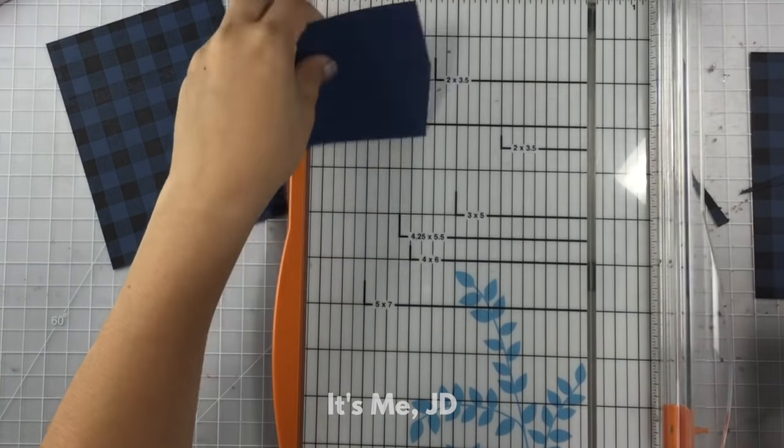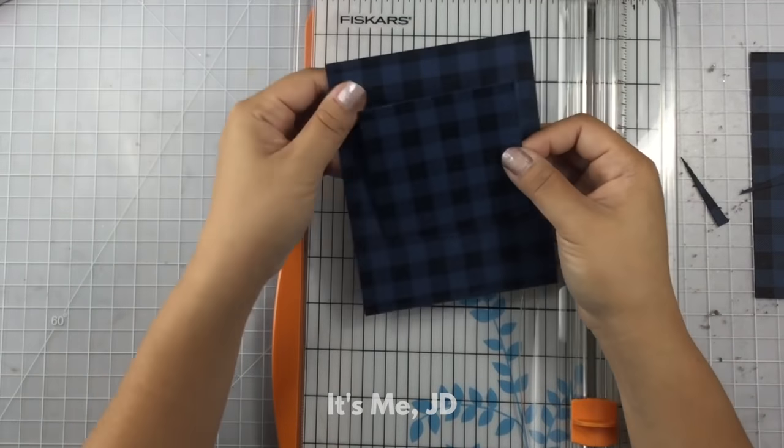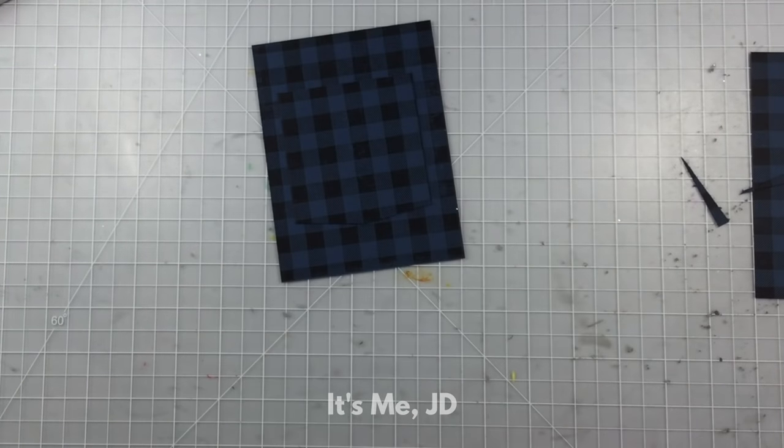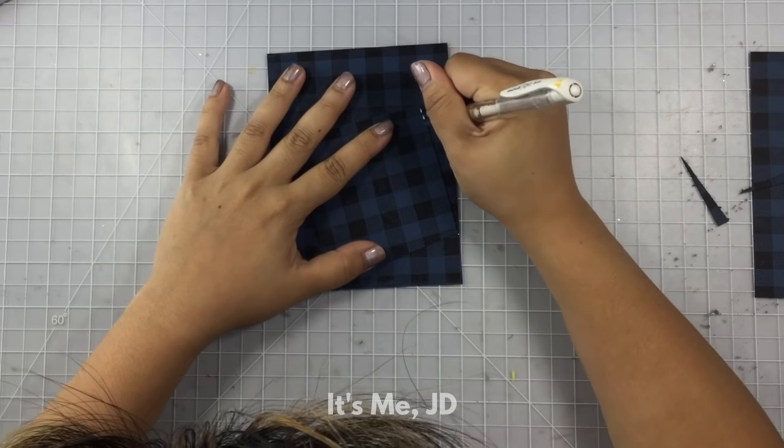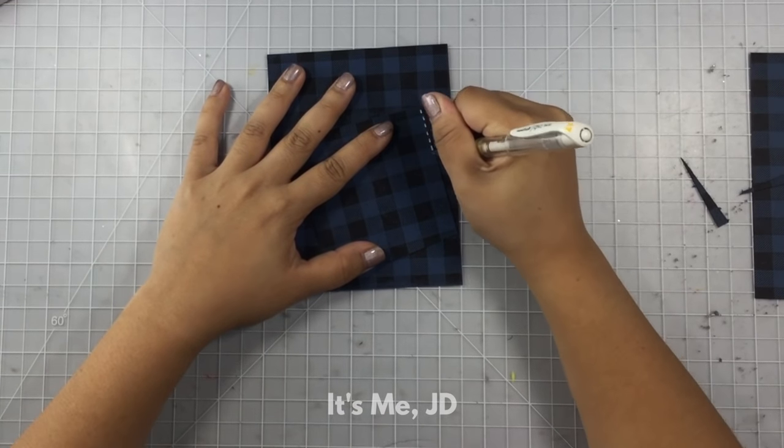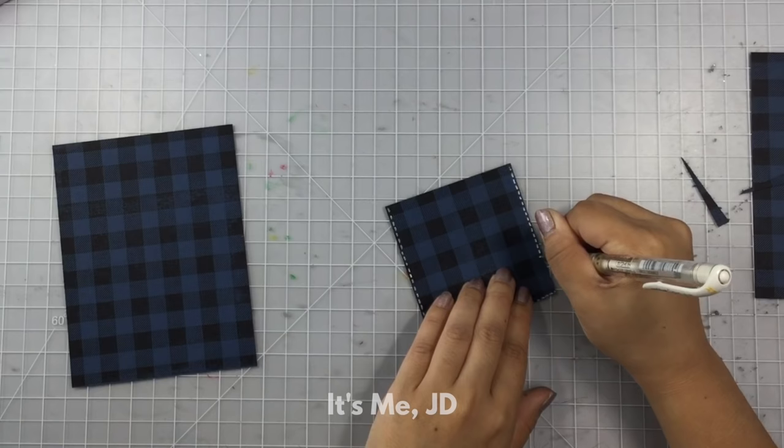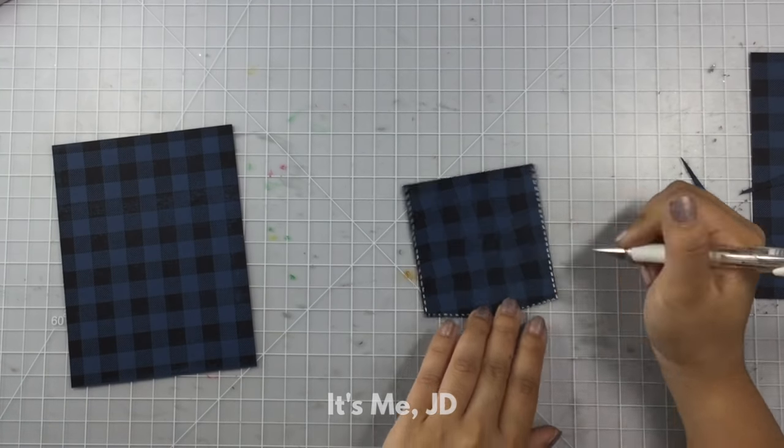Again, you don't need any die cutting machine or dies for this. You can really hand cut it or use a paper trimmer like I'm using here. And to add that shirt pocket touch, I'm going to go in with a white gel pen and add some faux stitching details to my shirt pocket.